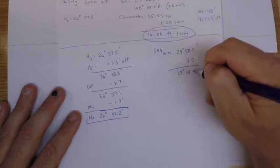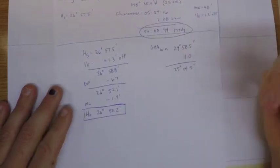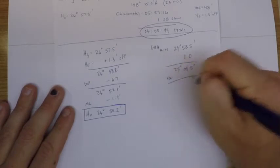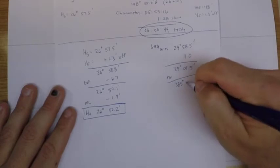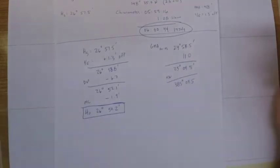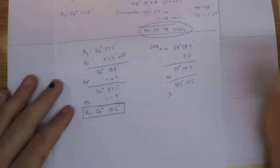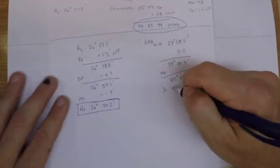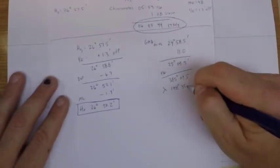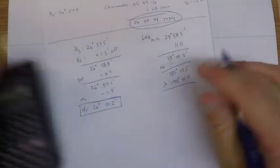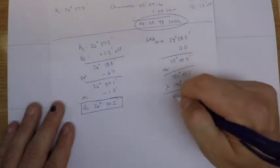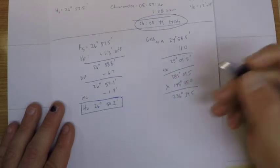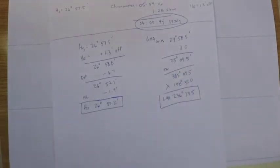I'm going to add 360 to that, we'll get 385 degrees 09.5, and then I'll subtract my longitude from that which was 148 35.0, end up with a final LHA of 236 degrees 34.5. From there we go into the Polaris tables in the nautical almanac in order to get our latitude.